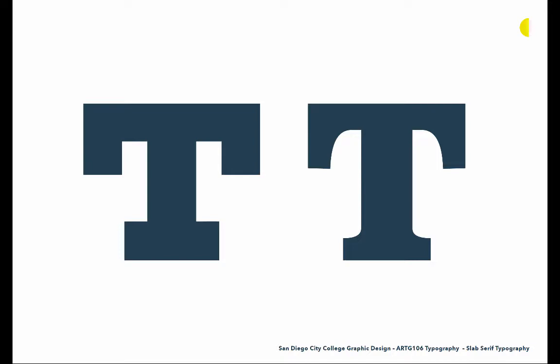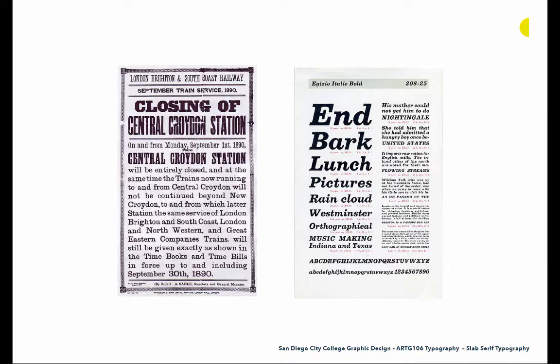Clarendons are really known for their bracketing — a concept where a rounding is added to the transition between the serif and the stem. If we look at an uppercase T without bracketing, you can see that very strong right angle at the bottom between that stem and that serif. On the right, we're looking at more bracketing: there's a rounding out of that transition between the serif and the stem, so it's no longer at a right angle. There's more of a rounded form there.